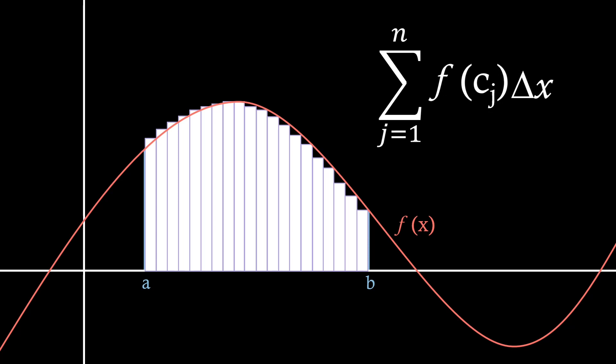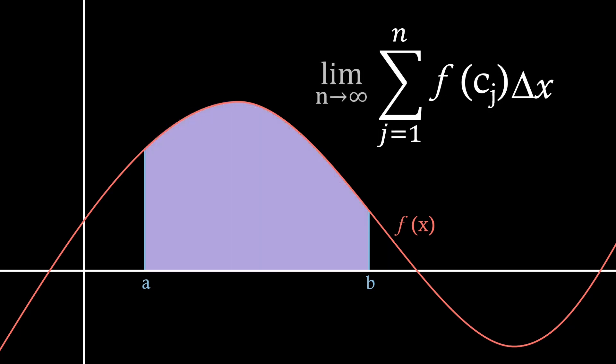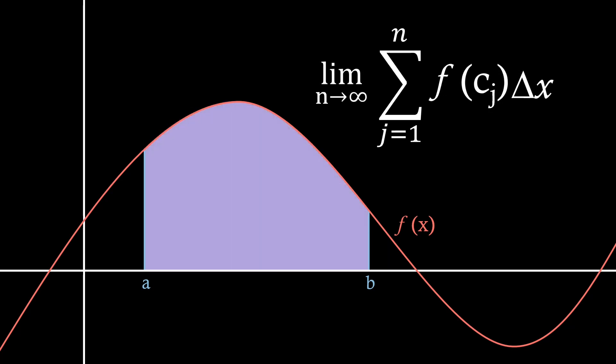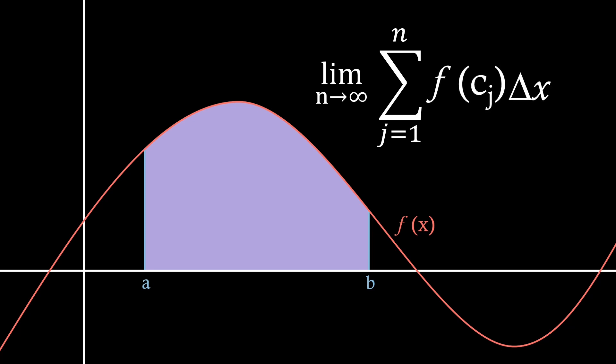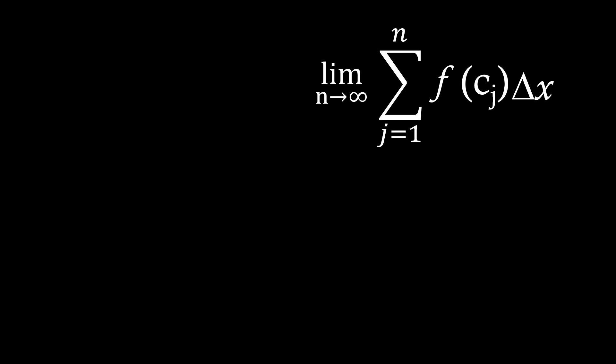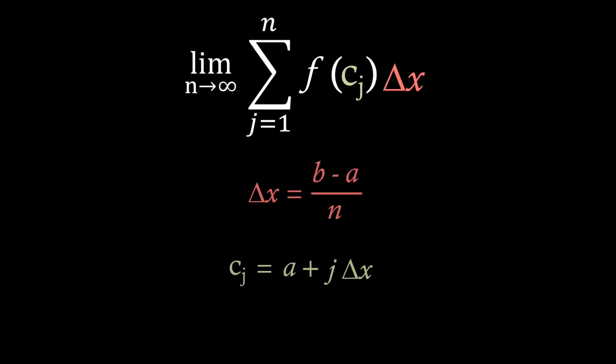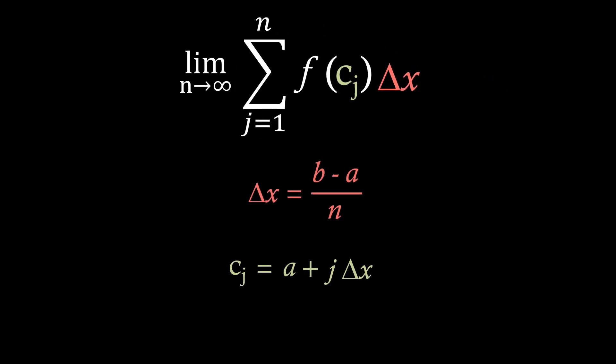Now, imagine we were to have an infinite amount of bars between our range a and b. We would see that we actually get the exact area under the curve, so this would no longer be an approximation. And this here is exactly the formula for Riemann sum, where we're taking an integral of a function f of x on the range a to b.